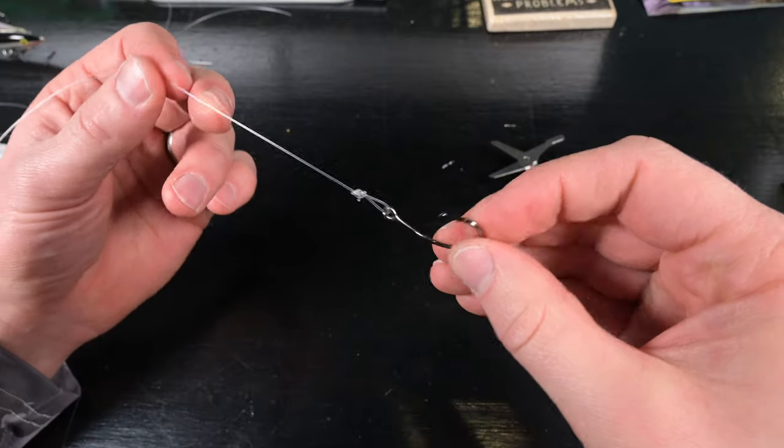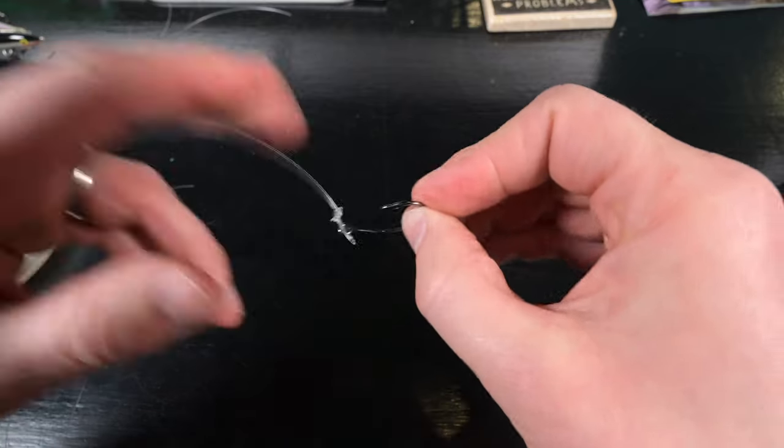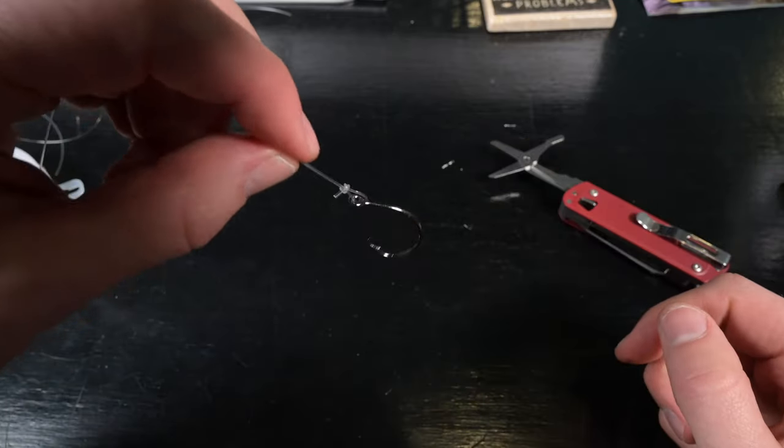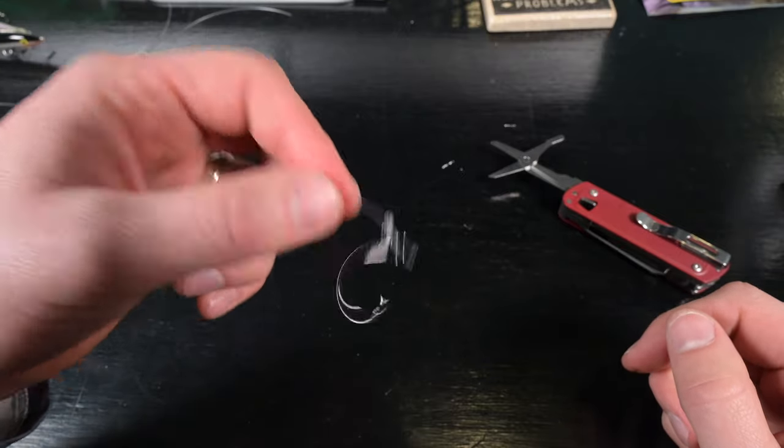Your bait just has free range of motion. So yeah, that is the perfection knot.